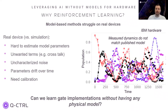This is demonstrated in the plot. You can see the evolution of the qubit's population in the presence of a drive. The solid lines are calculated from a simulation that assumes a model taken from the IBM backend, and the dots are data points from the real device. You can see clear discrepancies between the data and the simulation. The question we want to answer today is: can we learn gate implementations without having any physical model of the system?